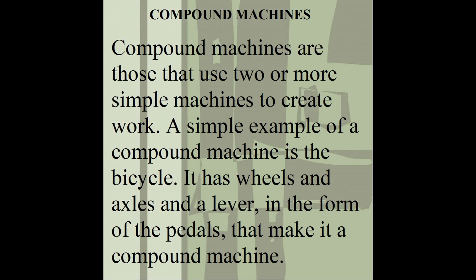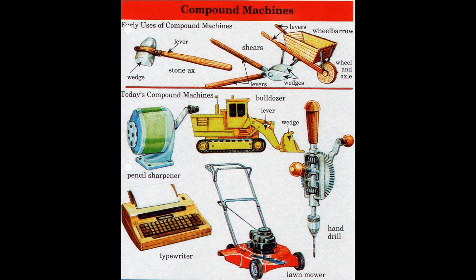Now, compound machines — what are compound machines? Compound machines are those that use two or more simple machines to create work. A simple example of a compound machine is a bicycle. It has wheels and axles and a lever in the form of the pedals, which makes it a compound machine.